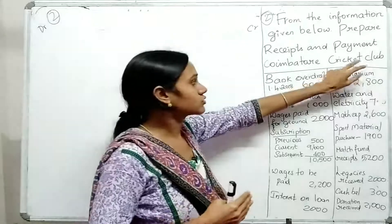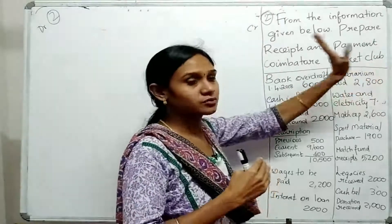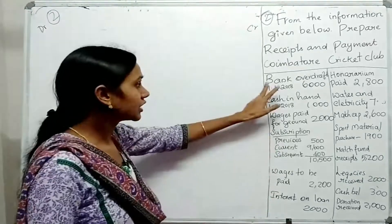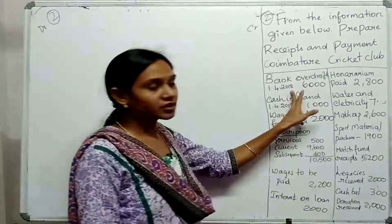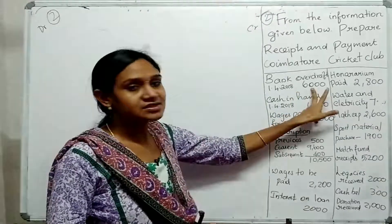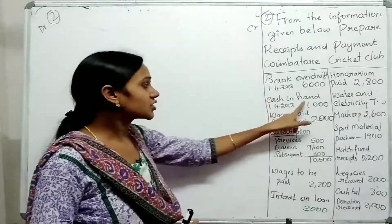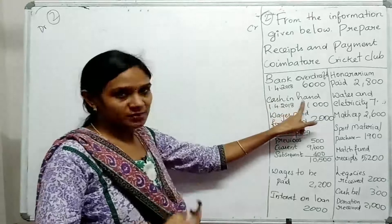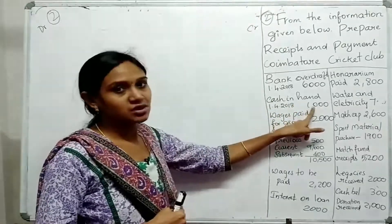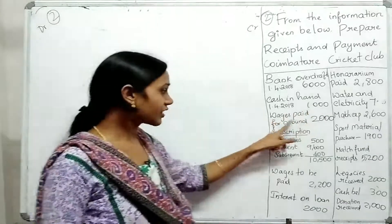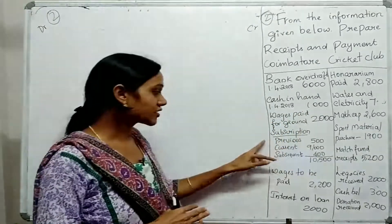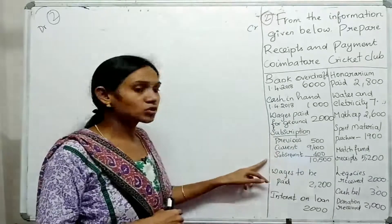Let me explain how to prepare the exercise problems. First, Bank Overdraft — I already told you this goes on the Payment side or Credit side — that is $6,000. Cash in Hand goes on the Debit side, which is the Receipt side — Cash in Hand is $1,000. Wages paid for the ground go on the Payment side. Next is Subscription: $3,000.